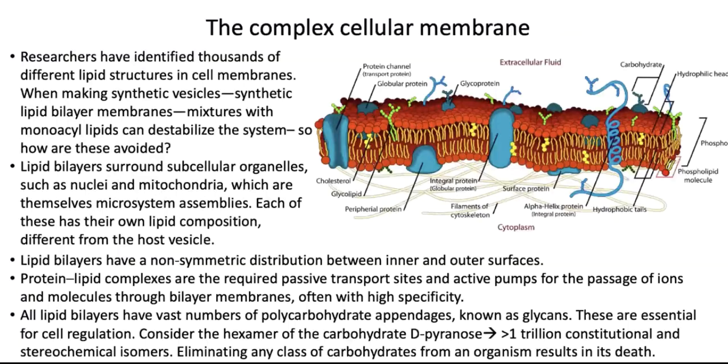As soon as that ionic concentration gets off — boom! The cell explodes because the ionic concentration has gotten off. It blebs and explodes. Nobody knows how that is done. None of the protocell experiments have these proteins going through them as these control gateways.